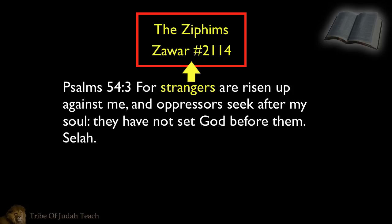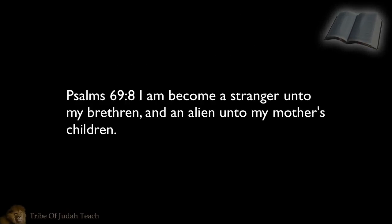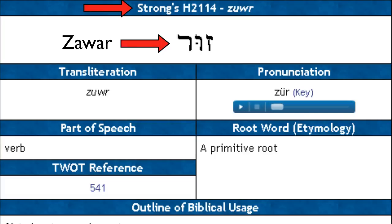It all depends on the situation of the people and the context of the verse. David called the Ziphites Zawar strangers because even though they were from his own tribe, they were treating David like they didn't know him. That's why David said this in Psalm 69 and 8: I am become a stranger unto my brethren. David said he was a stranger to his own brethren, and when you look the word stranger up in this verse, it's number 2114 and it's the Hebrew word Zawar.